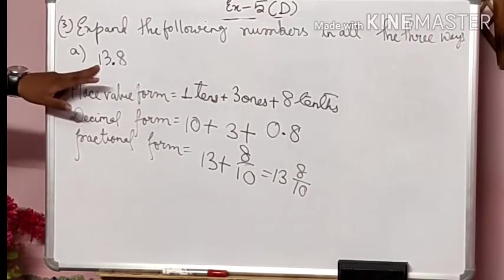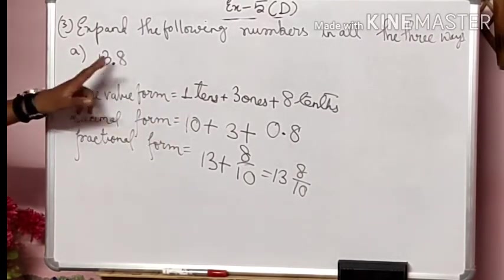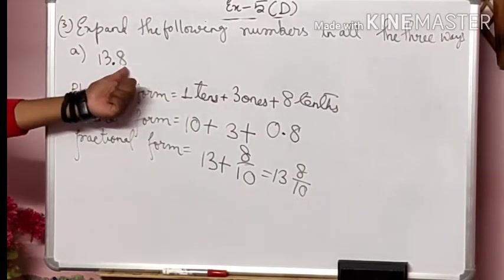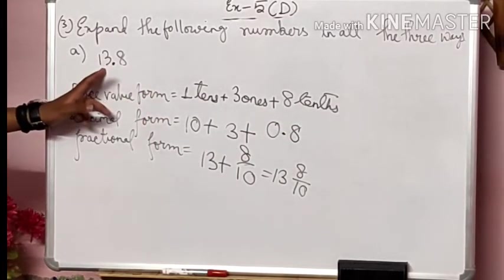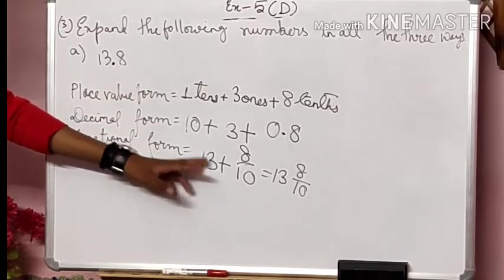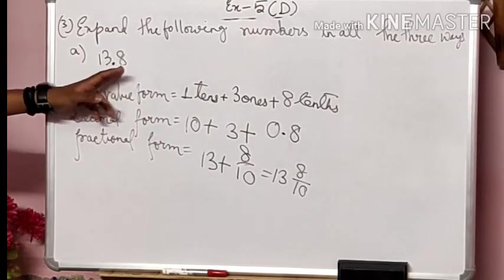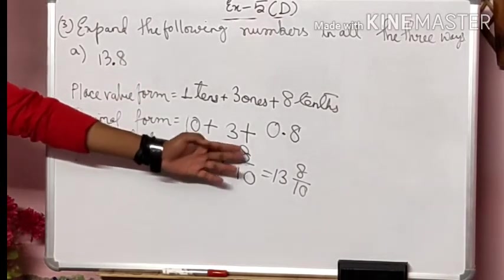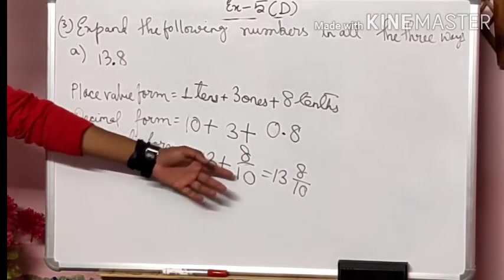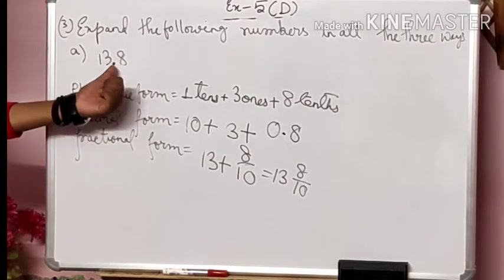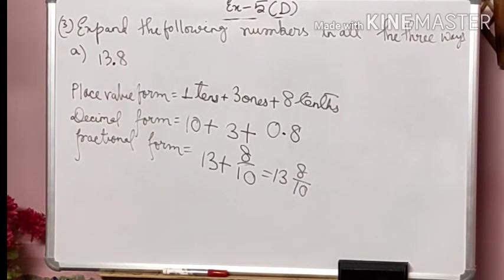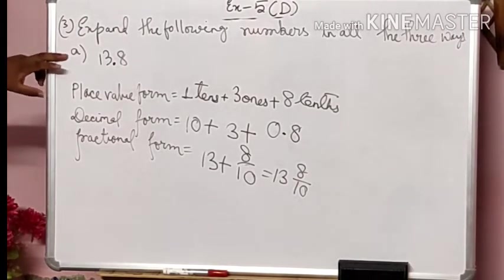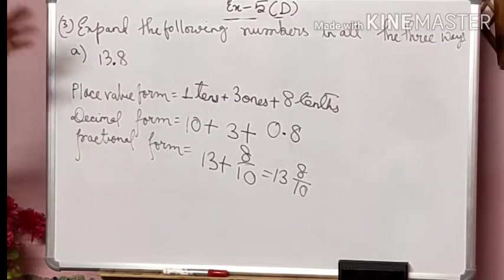For the fractional form: 13 is the whole number part, so it will remain as 13. This eight is after the decimal. We write 8 directly and give 1 in the denominator. After the decimal there is only one number, so that's why we give only one zero — making it upon 10. So it can be written as 13 and 8 upon 10. So: place value form is one tens + three ones + eight tenths; decimal form is 10 + 3 + 0.8; fractional form is 13 and 8 upon 10.